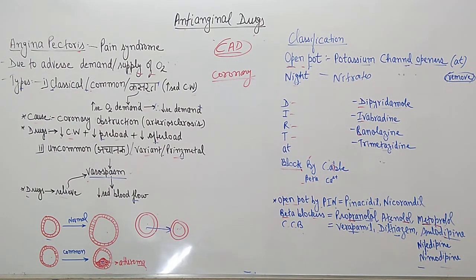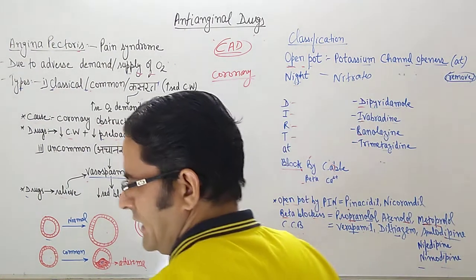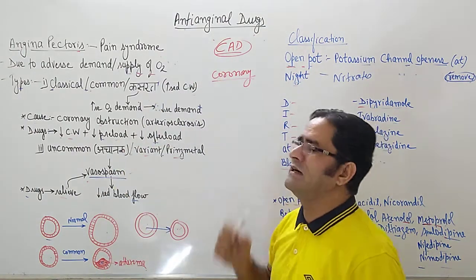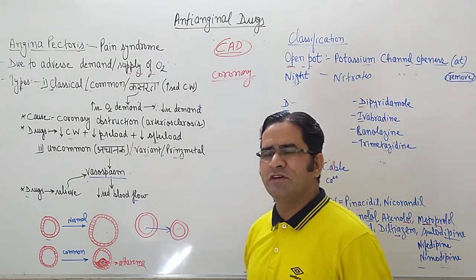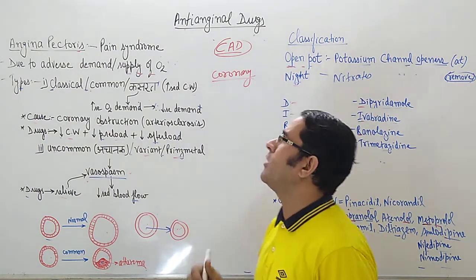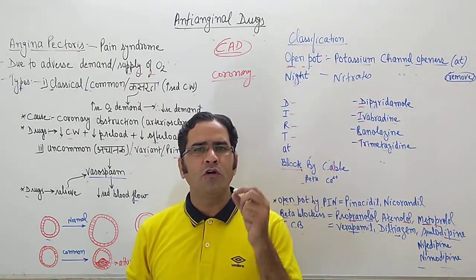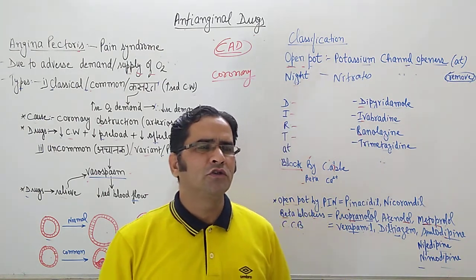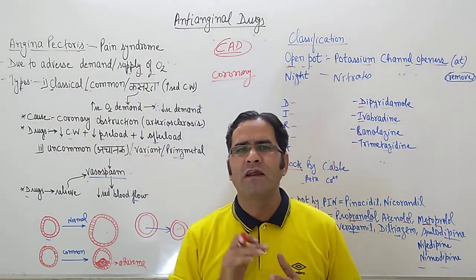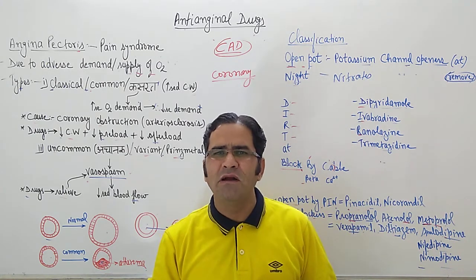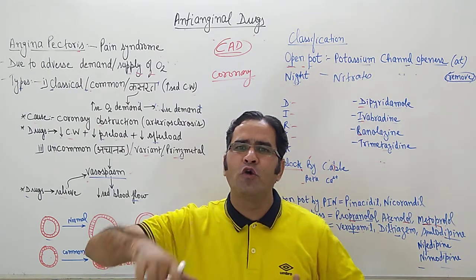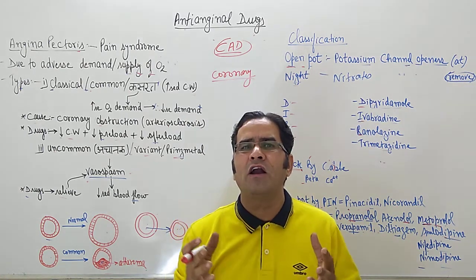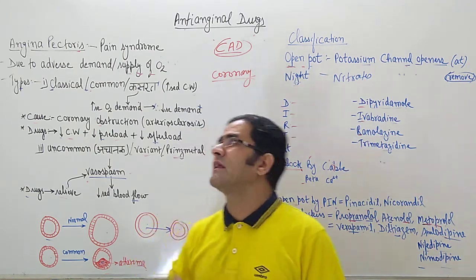Hello friends, welcome once again. Today we will see the trick and mnemonic of antianginal drugs — the drugs which are also termed as drugs for treatment of coronary artery disease. The coronary artery is the artery which supplies blood to the heart. Whenever the load on the heart is increased, it has to be supplied by the coronary artery, and if the coronary arteries are blocked, the heart itself will not be able to work.